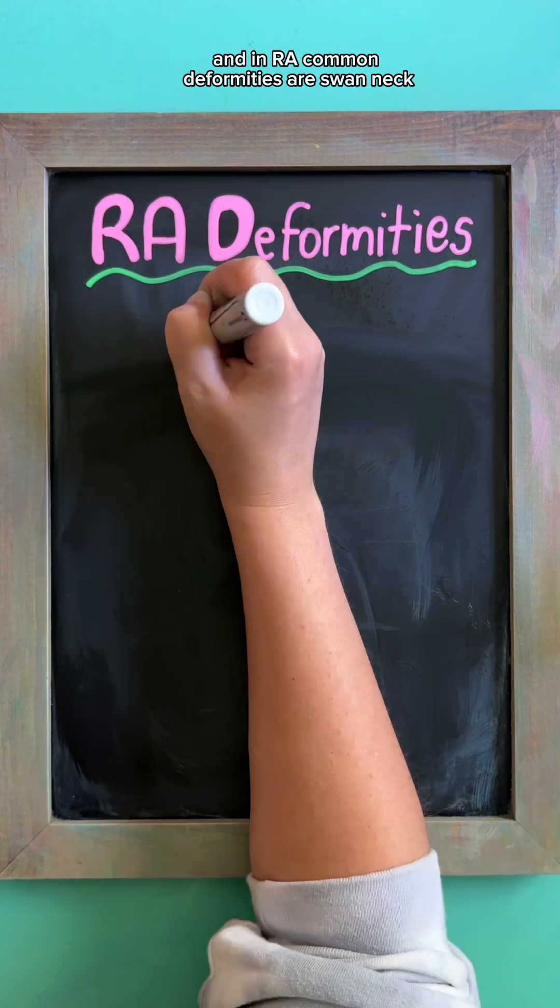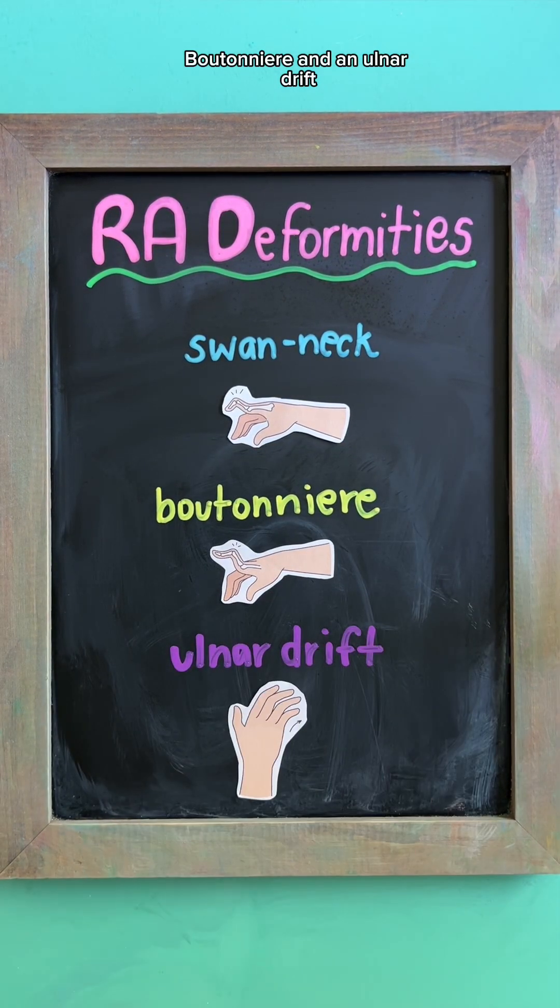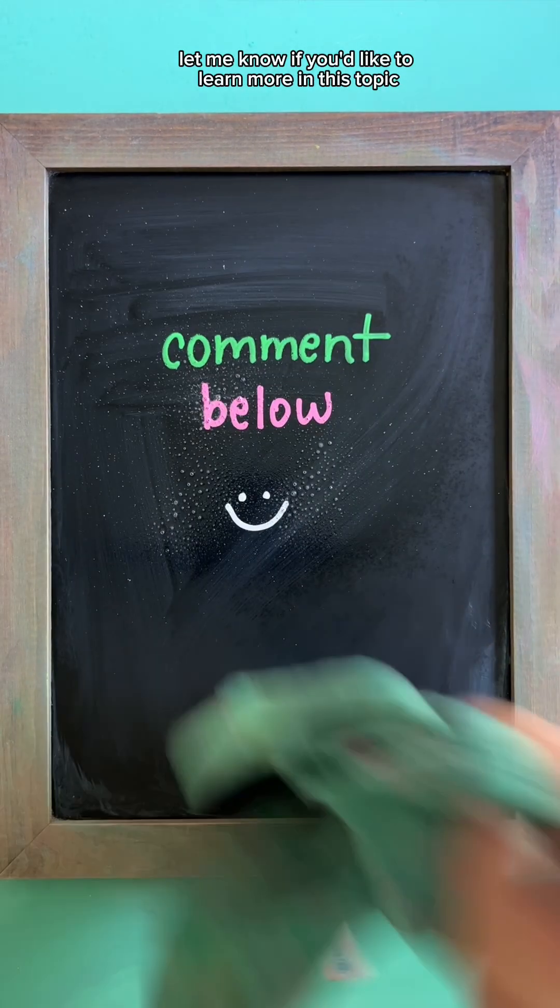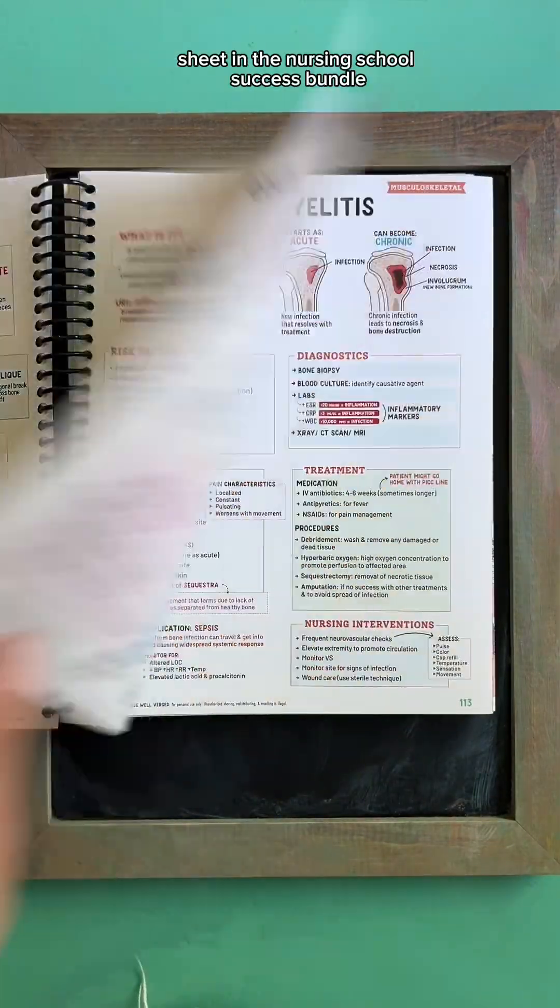And in RA, common deformities are swan neck, boutonniere, and an ulnar drift. Let me know if you'd like to learn more on this topic, and check out the full study sheet in the Nursing School Success Bundle.